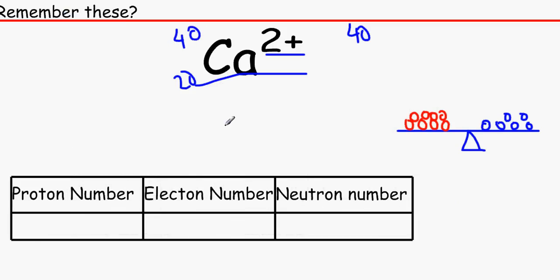The electron number has decreased by 2, so it's 18. And the neutron number is the mass number minus the proton number, which gives 20. Just because the electrons have changed does not change the neutron number. And that's it for atomic structure.